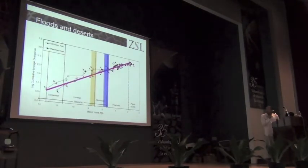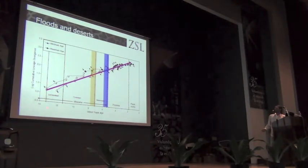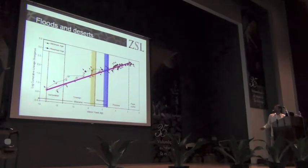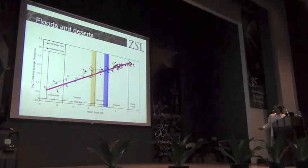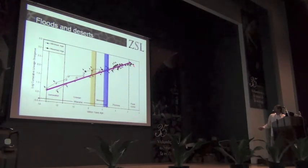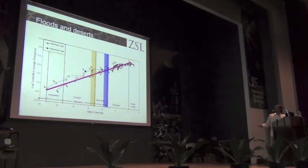So this is what's called a lineages through time plot. This is a representation of cyclamen diversity in terms of number of lineages through time. Here we have our 25 — or 24 — species just before the present day. Here's our timeline: this is the present, and this is 14 million years ago. We've got two lines here showing confidence intervals for our dating.